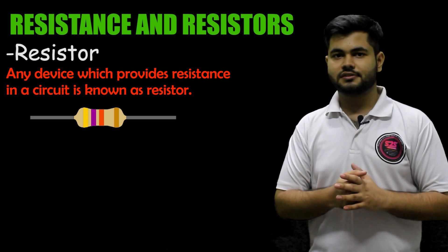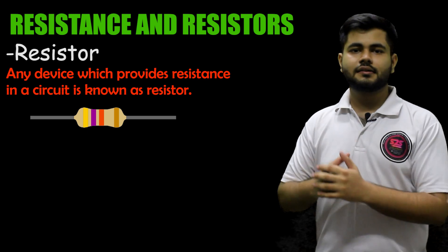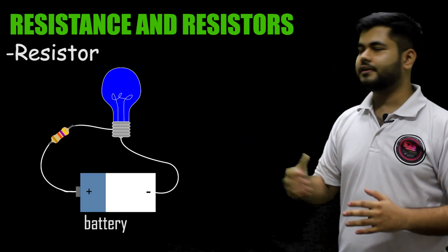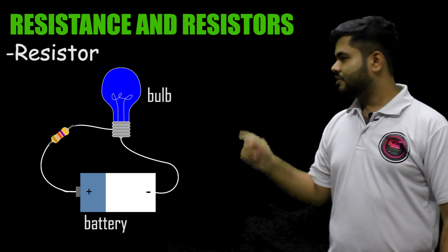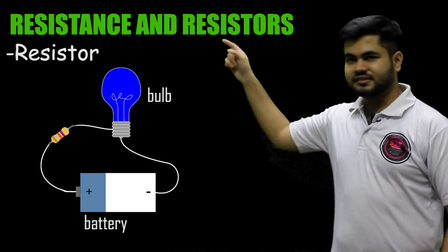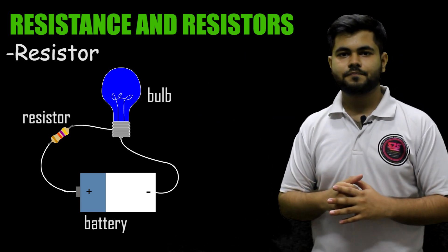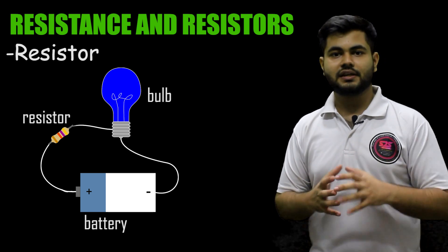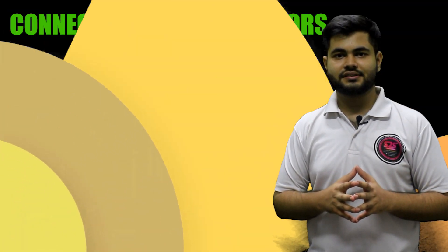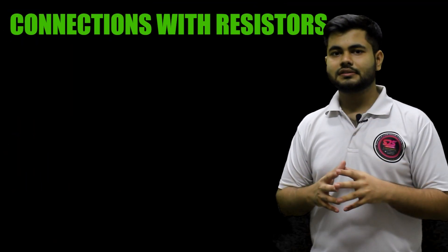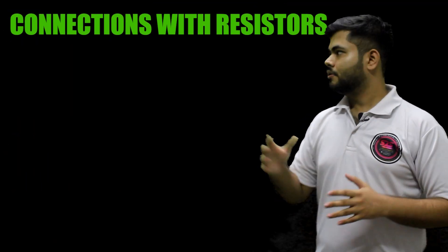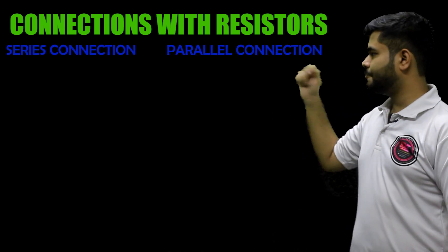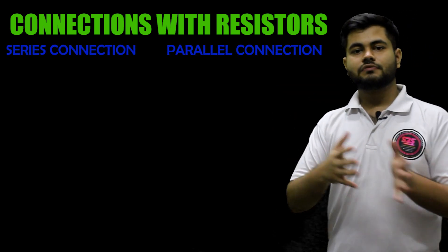Just like any other device you connect in a circuit — say a battery or a bulb — you can connect a resistor in any circuit. Now there are two ways in which we can connect resistors: one is a series connection and one is a parallel connection.